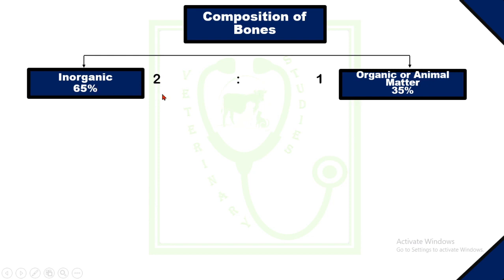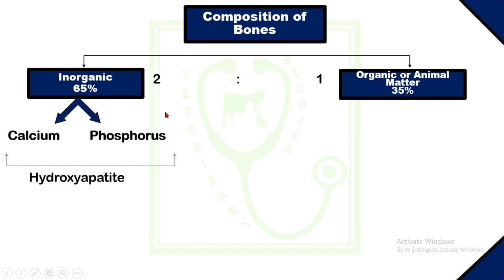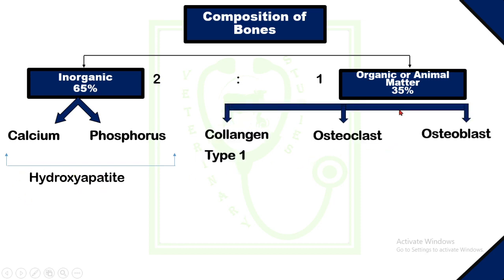The composition of bones: bone is composed of inorganic substance and organic substance. Inorganic substance constitutes about 65 percent of bone, whereas organic substance constitutes about 35 percent. The ratio of inorganic to organic matter is 2:1. Inorganic substances include mainly minerals such as calcium and phosphorus, which combinedly form a unit called hydroxyapatite. Organic matter includes collagen type 1, osteoclasts, and osteoblasts.